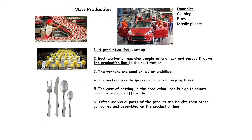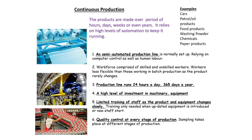Mass production involves a fully automated production line where each worker completes one task and passes it on to the next person. Workers are typically semi-skilled or unskilled. The cost of setting this up is quite high because you can have a lot of specialist custom-made equipment. Parts are bought in again as bought-in components. Mass-produced items include clothing, bikes, and mobile phones. Related to this is continuous production — the key difference is that continuous production doesn't stop: they make one thing and never swap between multiple products.